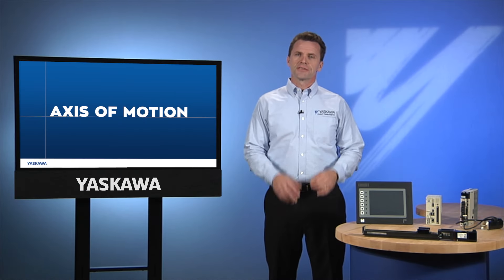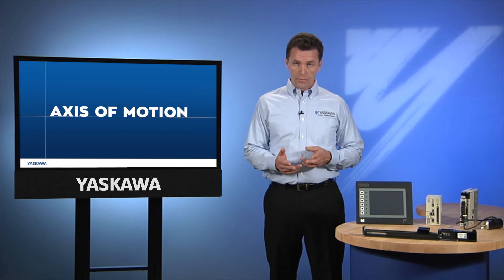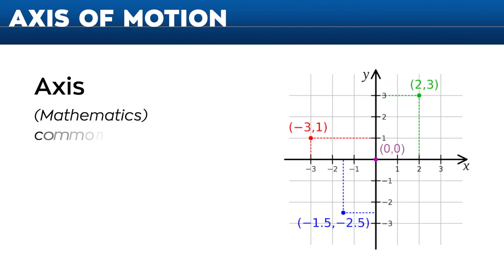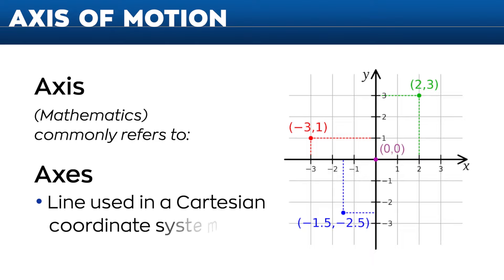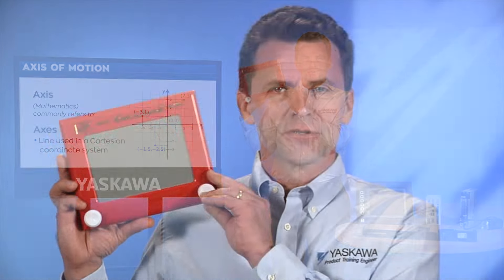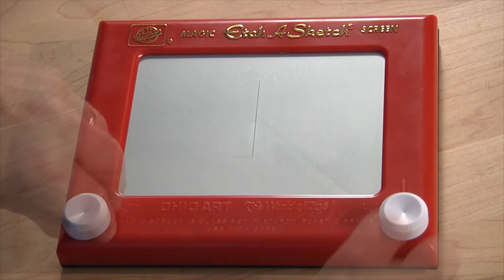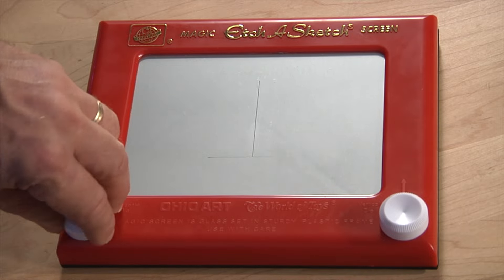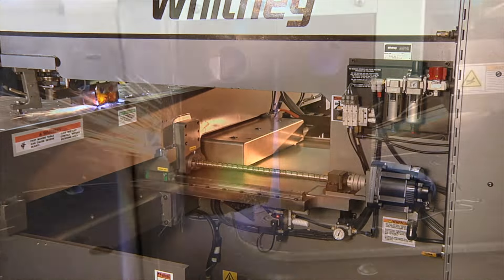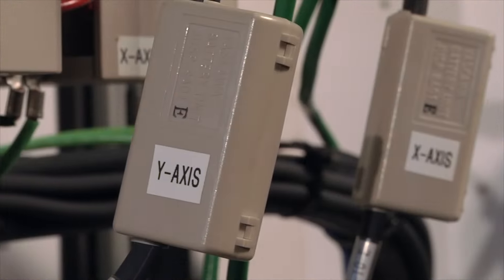The term axis is one you'll hear very often in this industry. Each servo and the mechanism it moves counts as one axis of motion. This word axis is drawn from mathematics and the concept of axes in a Cartesian coordinate system. Imagine that an Etch-a-Sketch toy was controlled by two servos — one servo would control the up and down direction, the other the left and right. That would be two axes of motion. The two axes are mechanically connected together to create two-dimensional motion, but even if there's no connection, each servo is considered an axis.